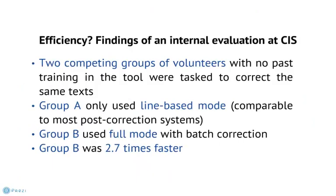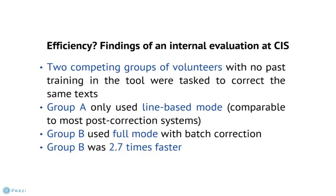But how useful is the tool really? SIS conducted a small-scale evaluation where two groups of volunteers were tasked to correct the same texts. Both groups worked with the SIS tool, but for the first group most of its special features had been deactivated, so all they could do was manually correct word for word — no profiles, no batch modes, no correction candidates. The second group, on the other hand, worked with the full set of features enabled. Even though the volunteers had not known the tool beforehand and had received only a short introduction, the second group corrected the texts 2.7 times faster than the control group.